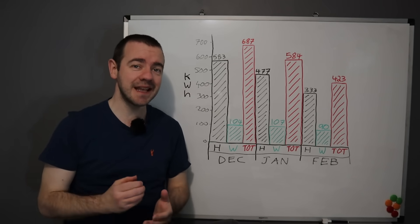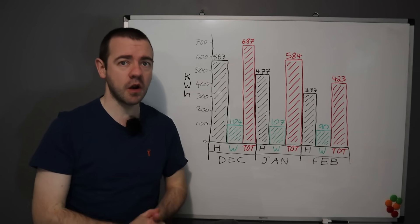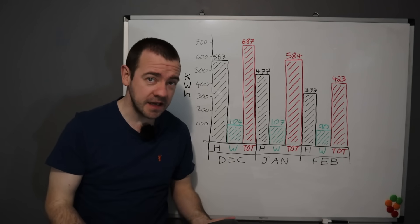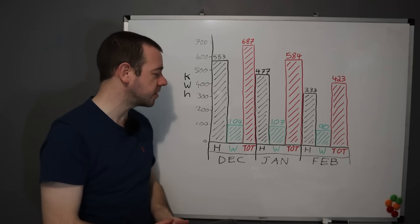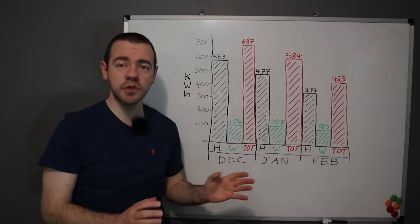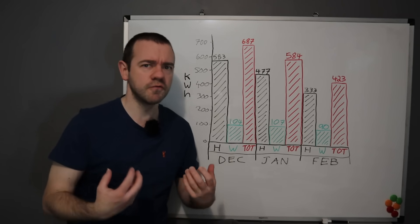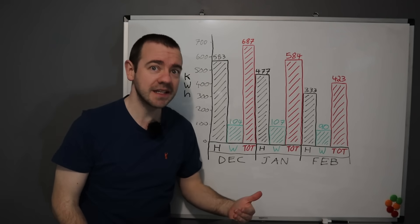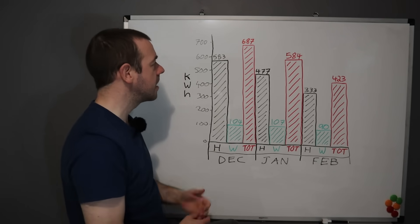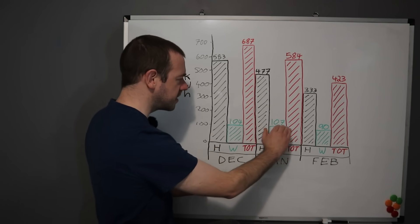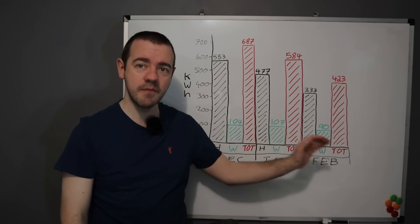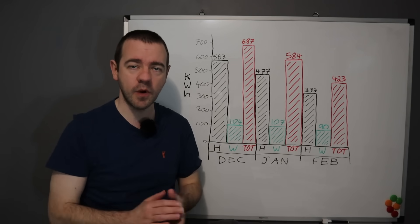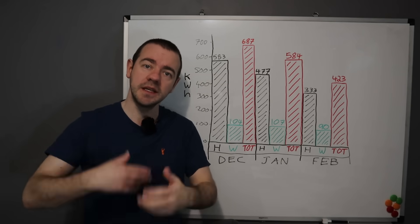And in total, so the red bars, the important one, 687 kilowatt hours in December, 584 in January, 423 in February. Now it should be pointed out that December was very, very cold in the UK, or at least for the UK. Minus 10, minus 15 I saw it for a few times up here in North Yorkshire. And for a good two or three weeks we had, as I said, for us, really cold winter. So it had a very, very good test.